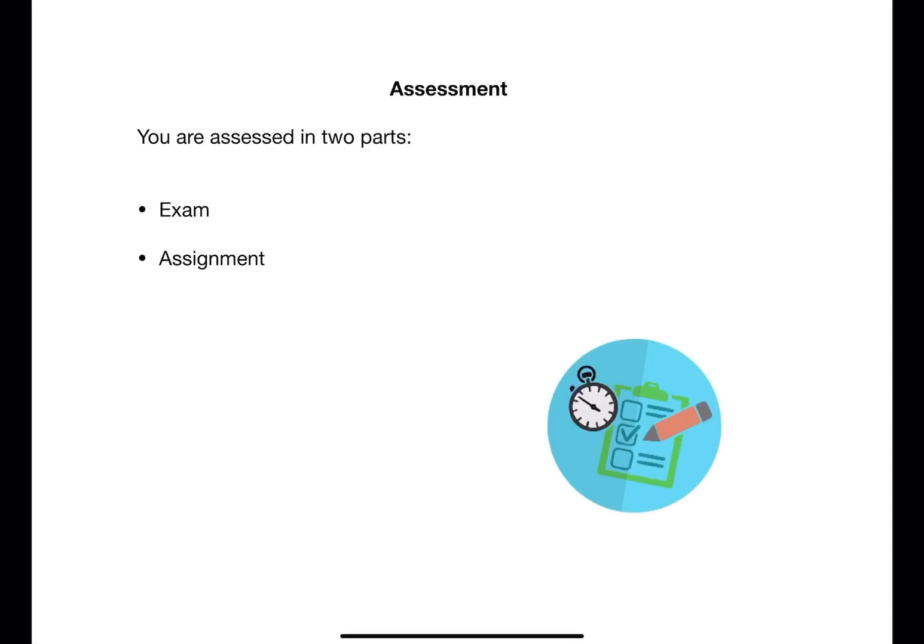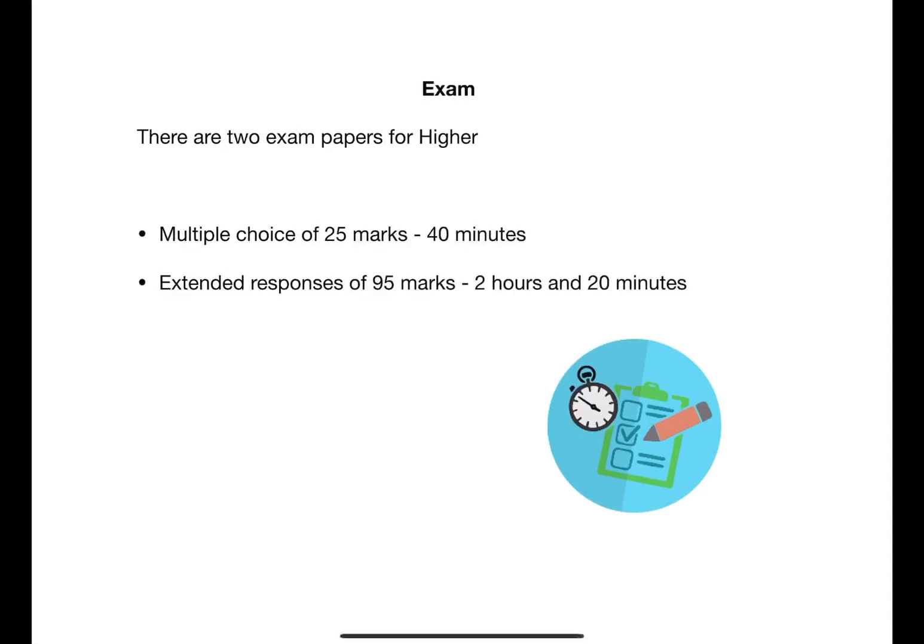The formal SQA assessment is split into two parts, an exam and an assignment. There are two exam papers totaling three hours. The first paper is 40 minutes long and has 25 multiple choice questions. The second is a 2 hour and 20 minute long extended answer paper of 95 marks. The extended response answers include answers of one or two words, a sentence or two, calculations, graphs, diagrams, explain fully and open-ended questions. The best way to prepare for this is to practice past papers which can be accessed on the SQA website.